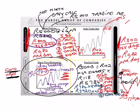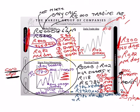Let me go a step further. Clear the calculator, but use the same 784 rand. Now I want to find out what it's doing for you for the whole month. How many working days are there in a month? 21. Times it by 21 — that gives you 16,464 per month.